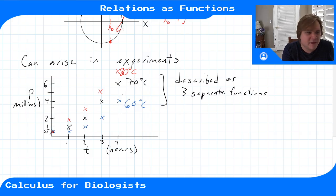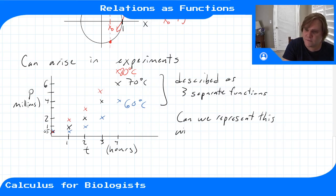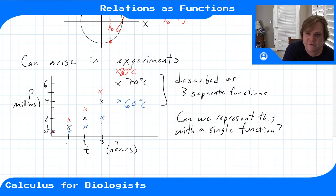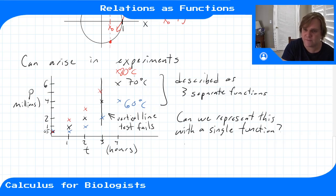But you might ask if there's a way to represent all this data with a single function. And the answer would be no. And why would it be no? Well, it would fail the vertical line test. We drew a vertical line, let's say here. Then we intersect our data more than once, so it fails.